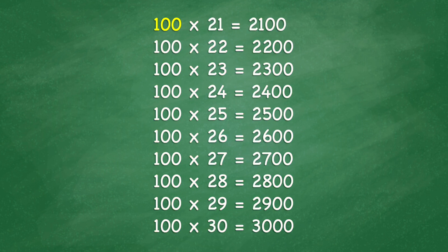100 times 21 equals 2,100. 100 times 22 equals 2,200. 100 times 23 equals 2,300. 100 times 24 equals 2,400. 100 times 25 equals 2,500.